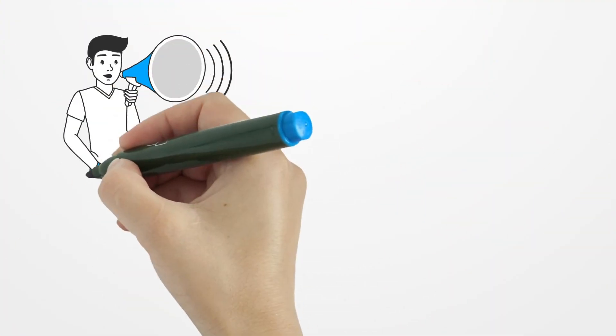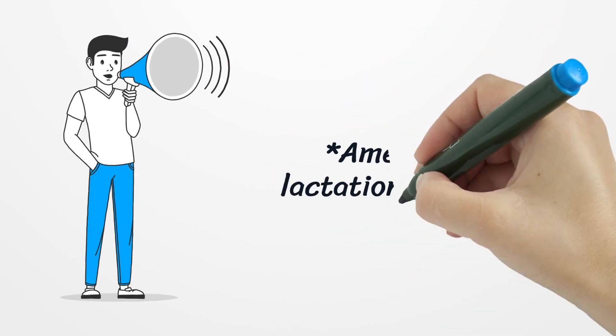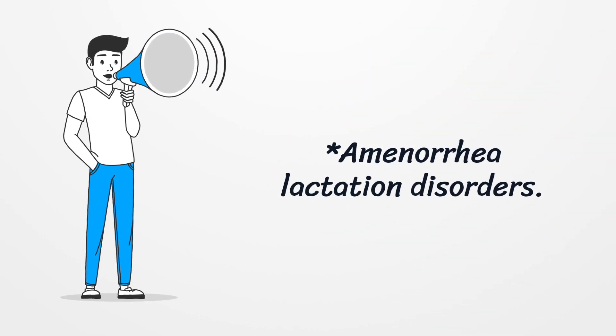Amenorrhea-lactation disorders such as Forbes-Albright and Chiari-Frommel syndromes produce secondary amenorrhea accompanied by lactation in the absence of breastfeeding. Associated features include hot flashes, vaginal atrophy, and large engorged breasts.